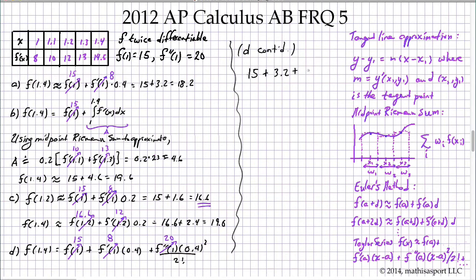And so we have 15 plus 8 times 0.4, which is 3.2. What is 0.4 squared? That's 0.16. So we have 20 times 0.16 all over 2. 20 over 2, I'm going to simplify as 10. 10 times 0.16 is 1.6. So I have 15 plus 3.2 plus 1.6, and that's going to be 19.8.